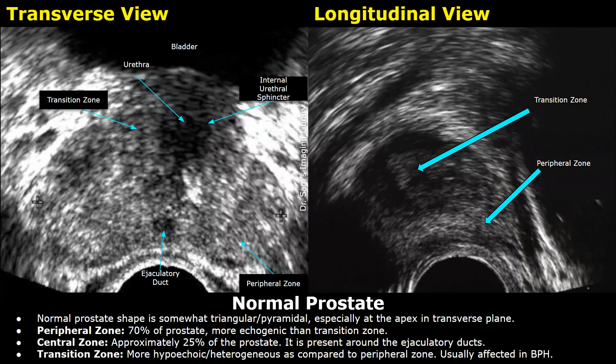Hello everyone, this is Dr. Sam and this video is about benign prostatic hyperplasia on ultrasound. BPH is a common condition in elderly men and is an abnormal enlargement of the prostate. We will be looking at transrectal ultrasound images of the prostate to learn how a normal prostate and an enlarged prostate look in this transrectal view.